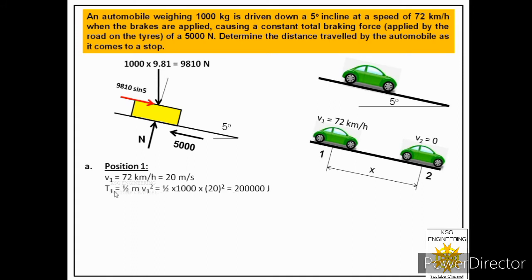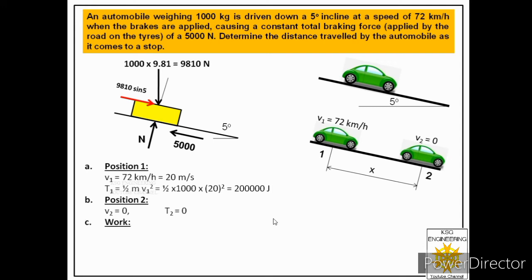We calculate the kinetic energy at position one: T1 = ½mv1² = ½ × 1000 × 20² = 200,000 Joules (2 lakh Joules), where m = 1000 kg and v1 = 20 m/s. At position two, the velocity is zero, so the kinetic energy T2 is also zero.